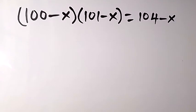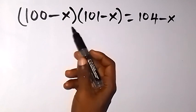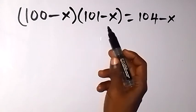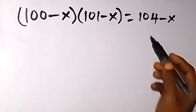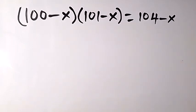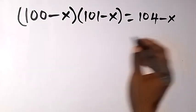Hello, you are welcome. How to solve this problem: (100 - x) multiplied by (101 - x) equals 104 - x. Here we have two interesting solutions. If you are watching my video, please give it a thumbs up and also subscribe to my channel, thank you.